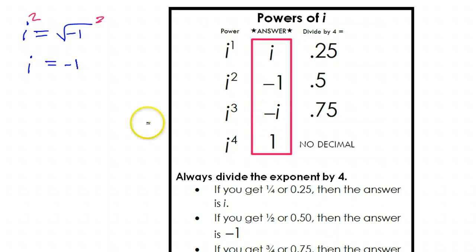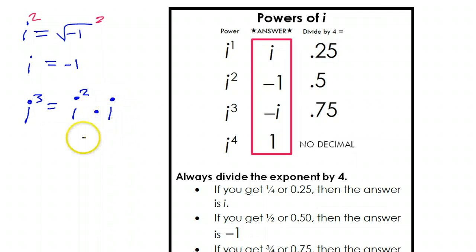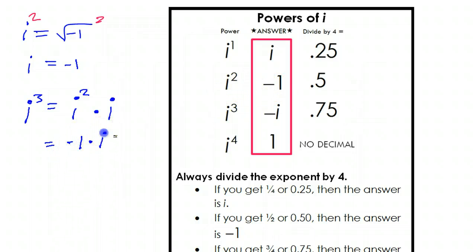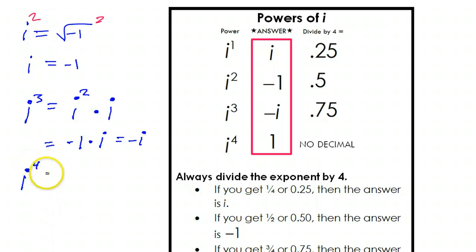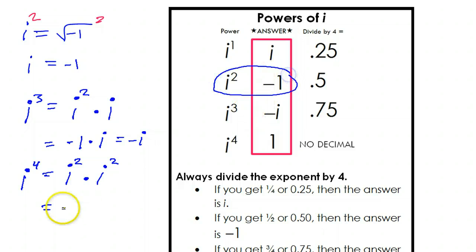i to the third power is negative i. You could think of i to the third power as i squared with an extra i left over — i to the third power is i squared times i. But we just decided that i squared is negative 1, so this would just make negative 1 times i, which would just be negative i. Now i to the fourth power is 1. You could think of that as i squared times i squared, which is negative 1 times negative 1, so of course that's positive 1.